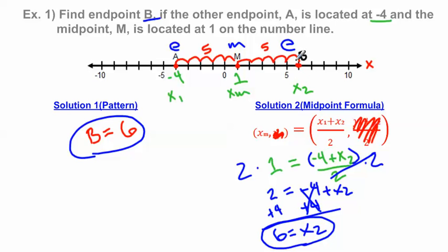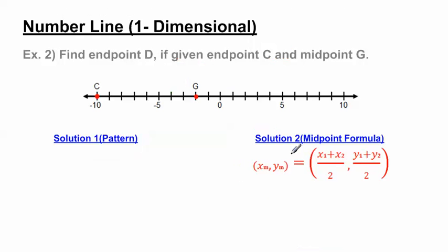So we know B is going to be 6. The second solution method using the midpoint formula isn't always required, but if your teacher asks you to solve using the formula, the pattern alone won't show sufficient work for full credit. That might be why you need to know this. Let's do one more problem and then we'll call it quits on this video.